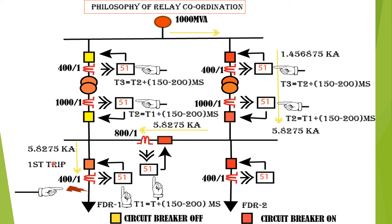Based on these fault currents, the TMS values must be calculated for the overcurrent relay on the feeder 1 CT secondary, for the bus coupler, for the LV side overcurrent relay of the transformer, and for the HV side overcurrent relay. A trip time of 200 milliseconds and a 150–200 millisecond grading margin are considered for each upstream relay.